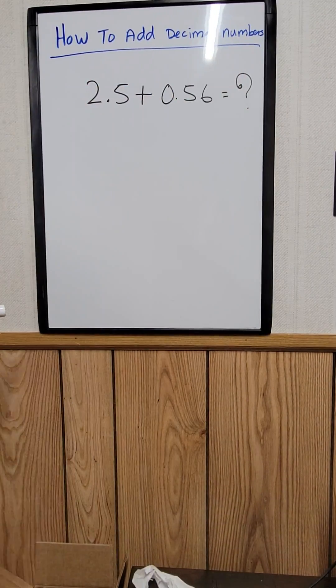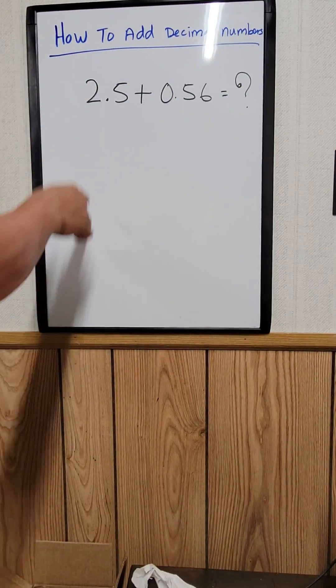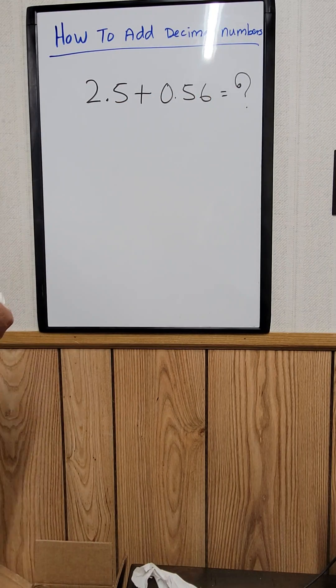How to add decimal numbers. For example, right here, 2.5 plus 0.56 equal to what?